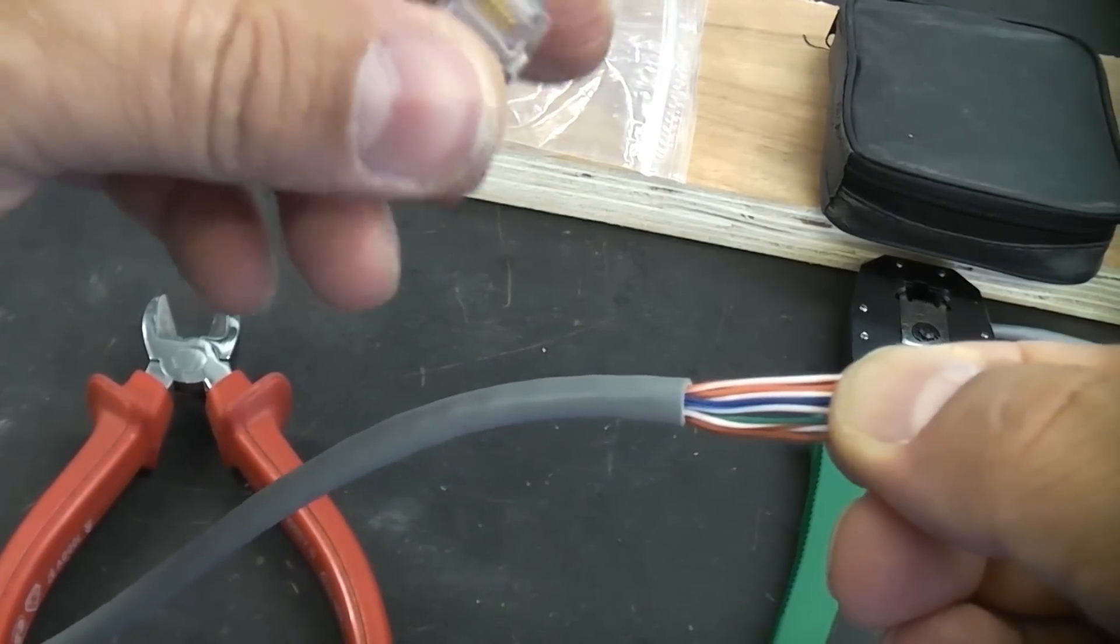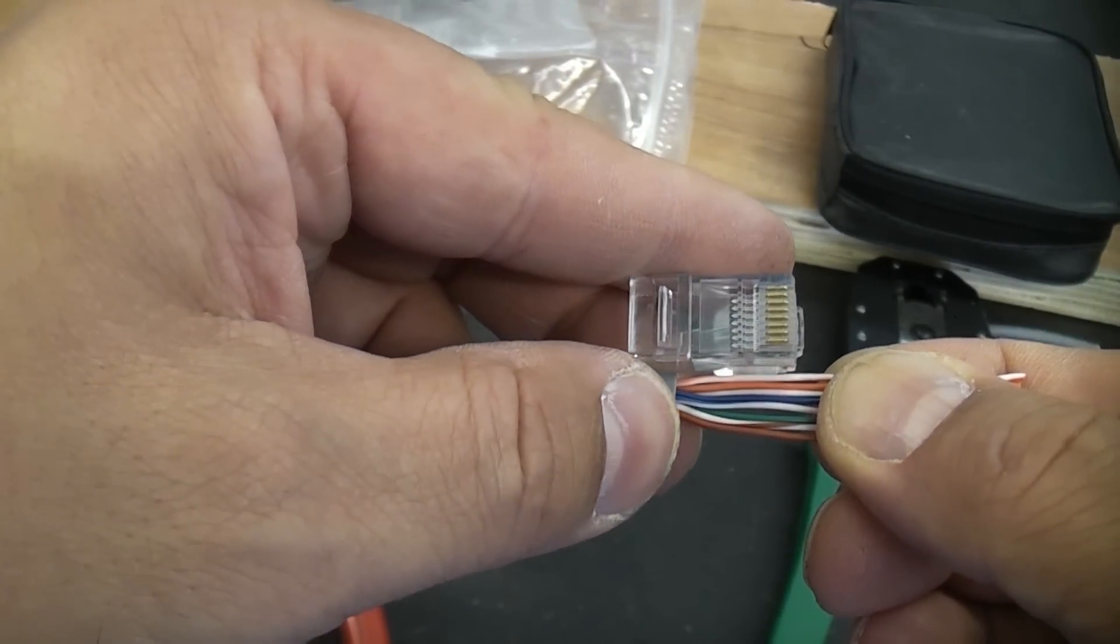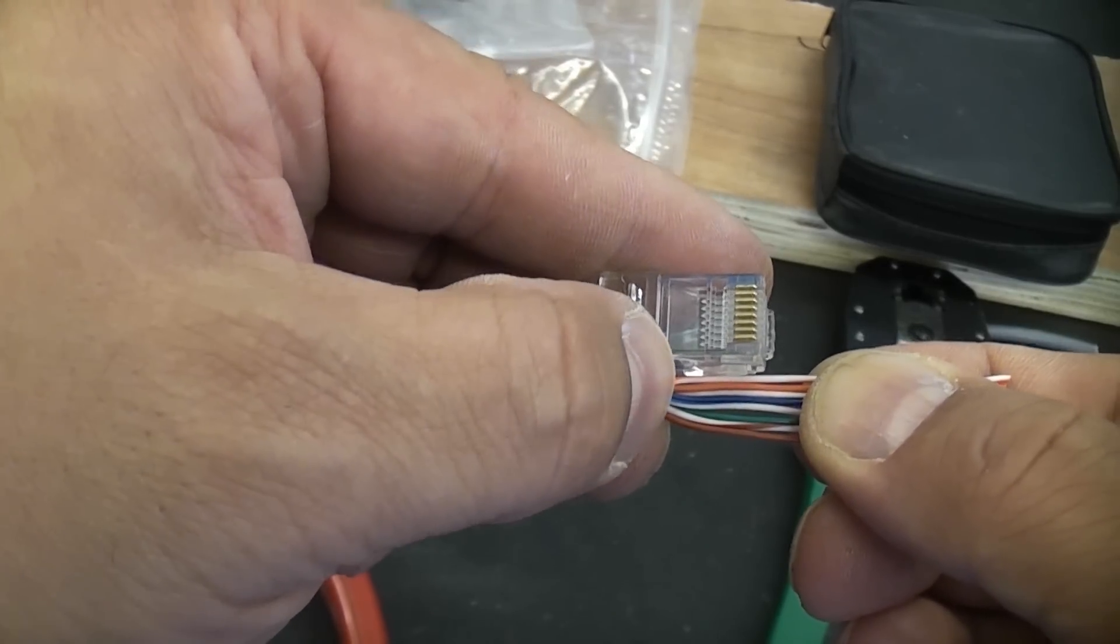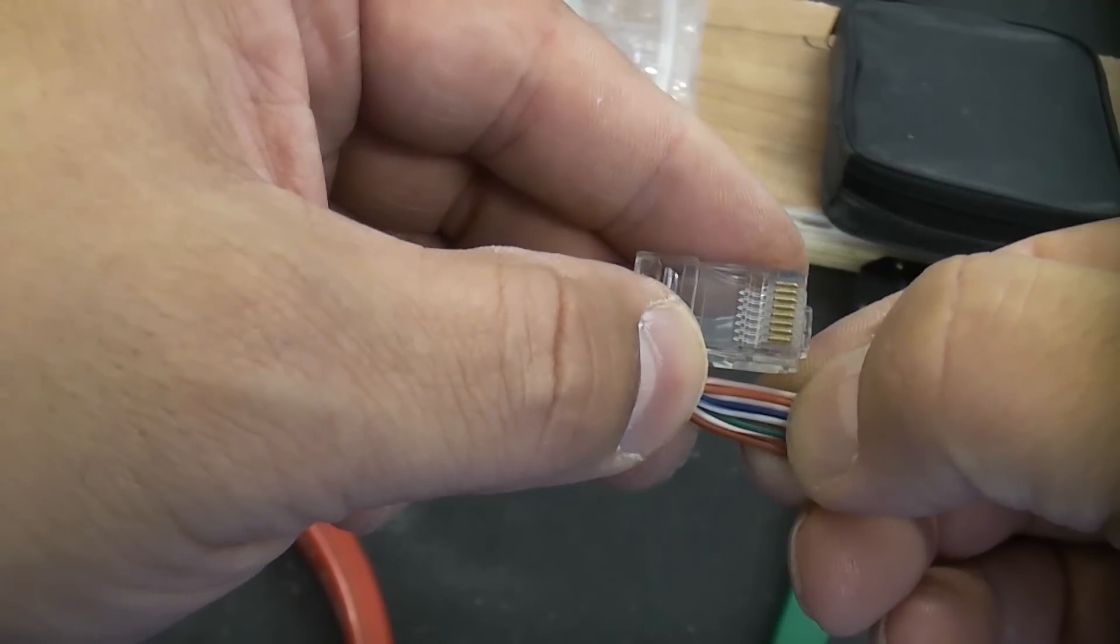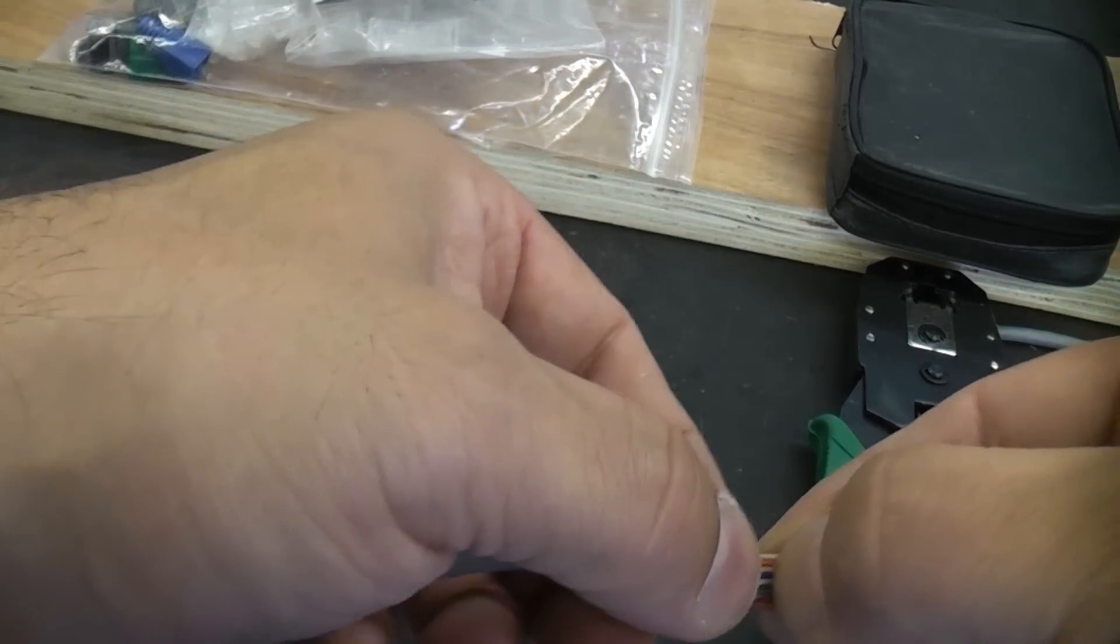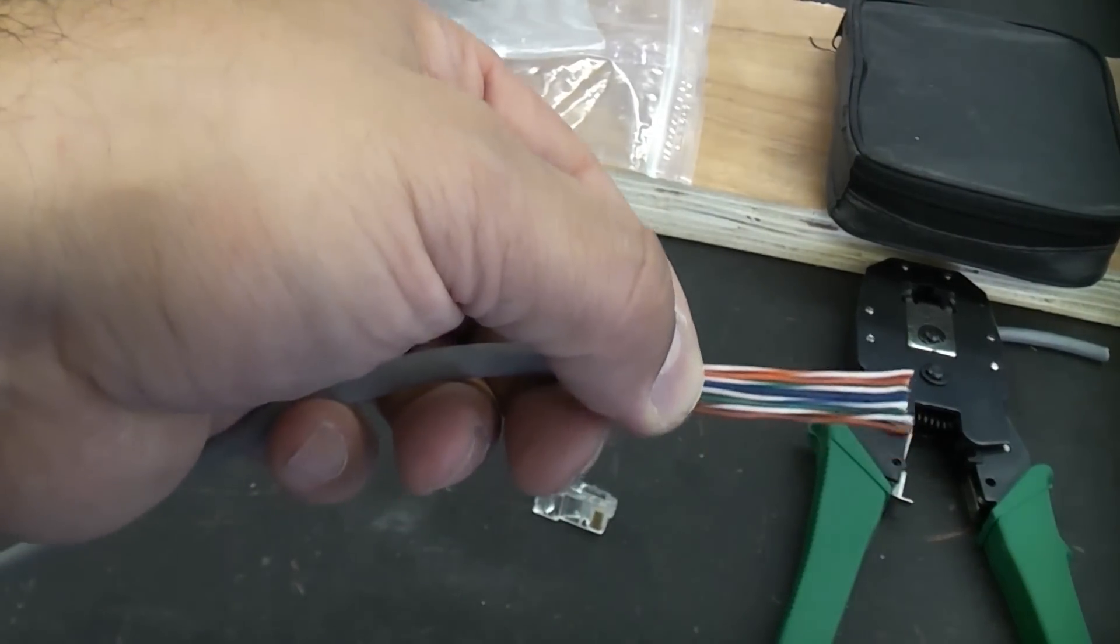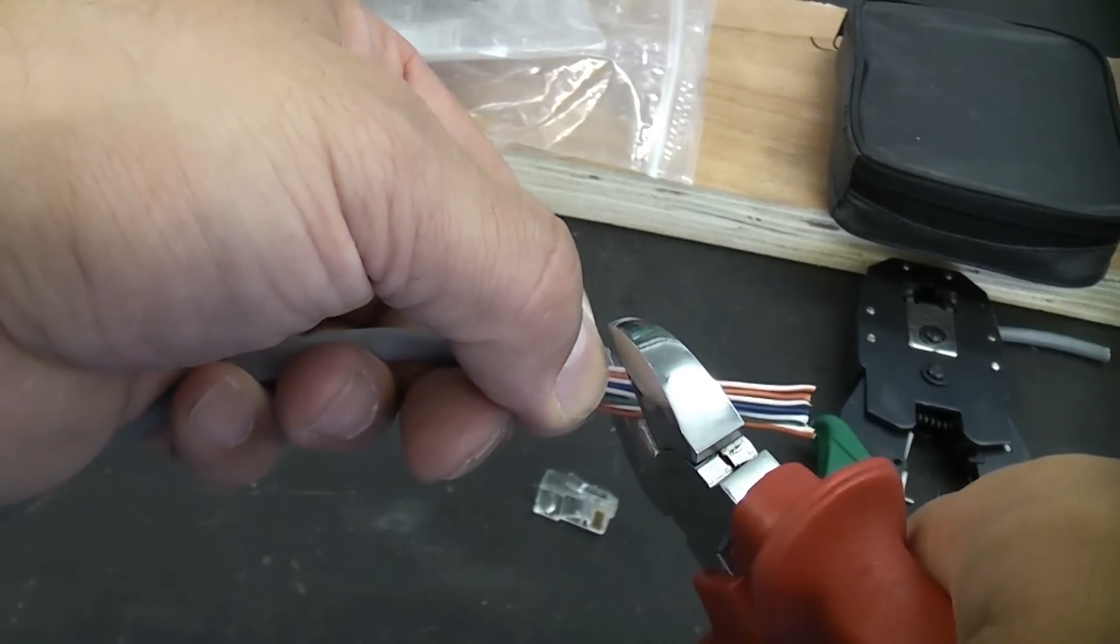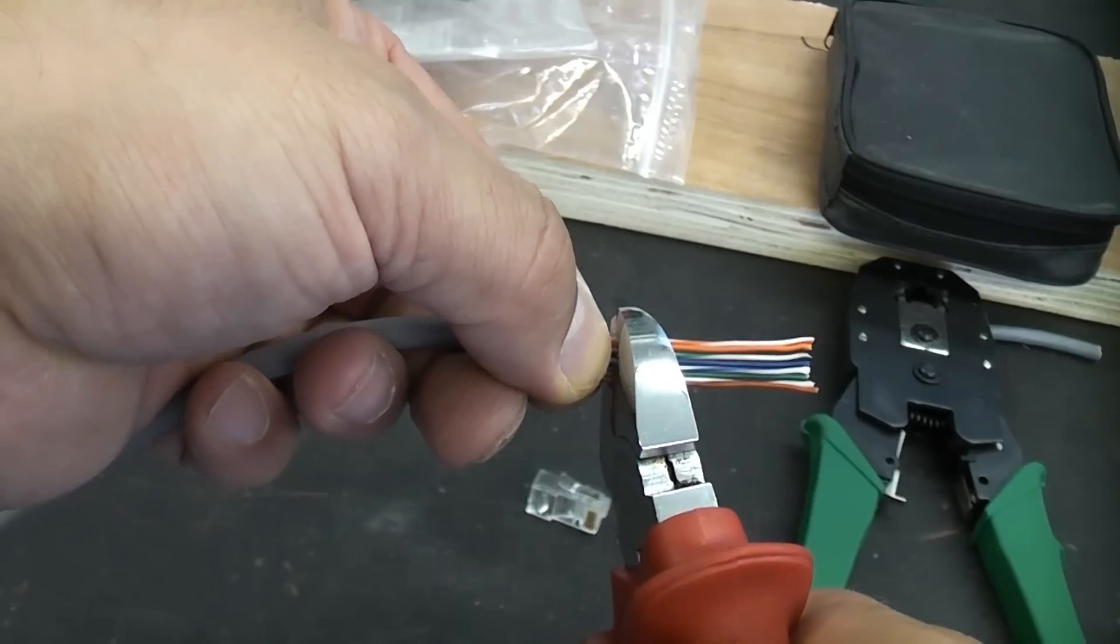We're then going to get the RJ45 connector and we're just going to put that on there. We need to crimp some of the plastic outer insulation in there so we need to cut off the wires to approximately that length. When you do this you need to make sure that you give it a really straight cut. You do not want it to be on an angle like that or else it will not work properly. So we need a nice straight cut across there.